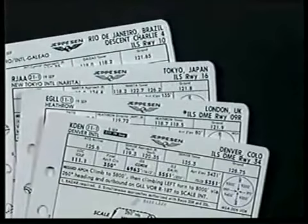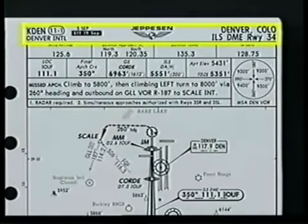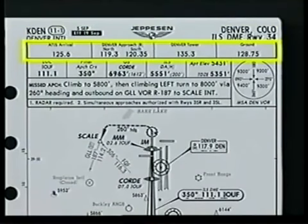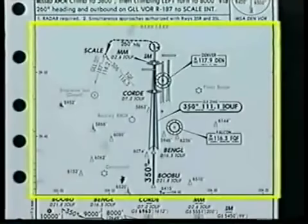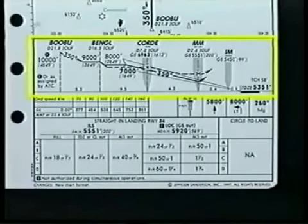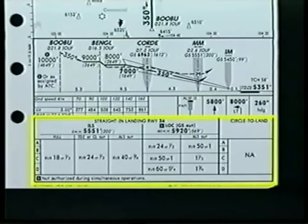Eventually, all Jeppesen approach and airport charts worldwide will be converted to the new format. The general layout of the new approach chart format includes the following sections: heading, plan view, profile view, and minimums. The heading section consists of heading information, communications, pre-approach briefing information, and the minimum safe altitude or MSA graphic. The plan view section includes the approach plan view graphic. The profile view section contains the profile view graphic, conversion tables, and icons. The minimum section contains landing minimums.